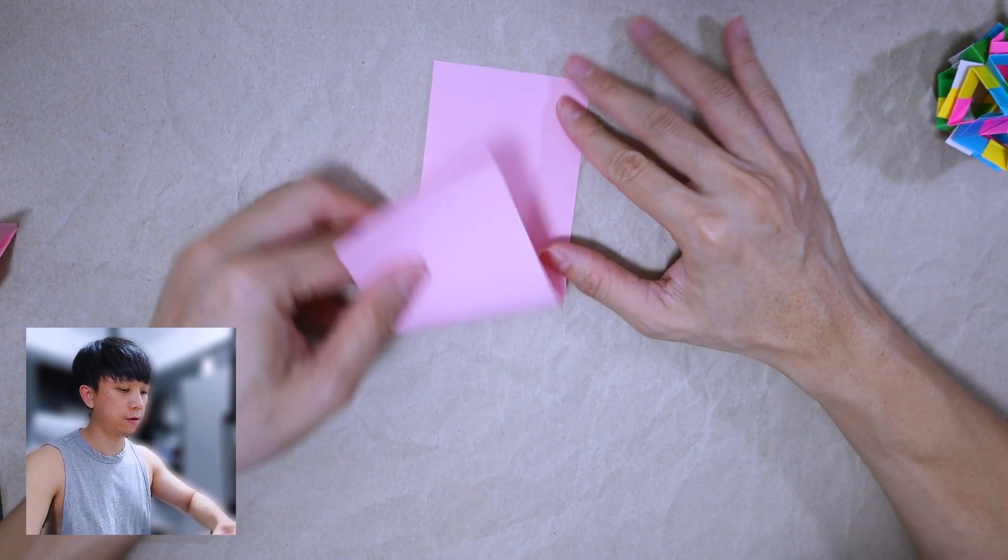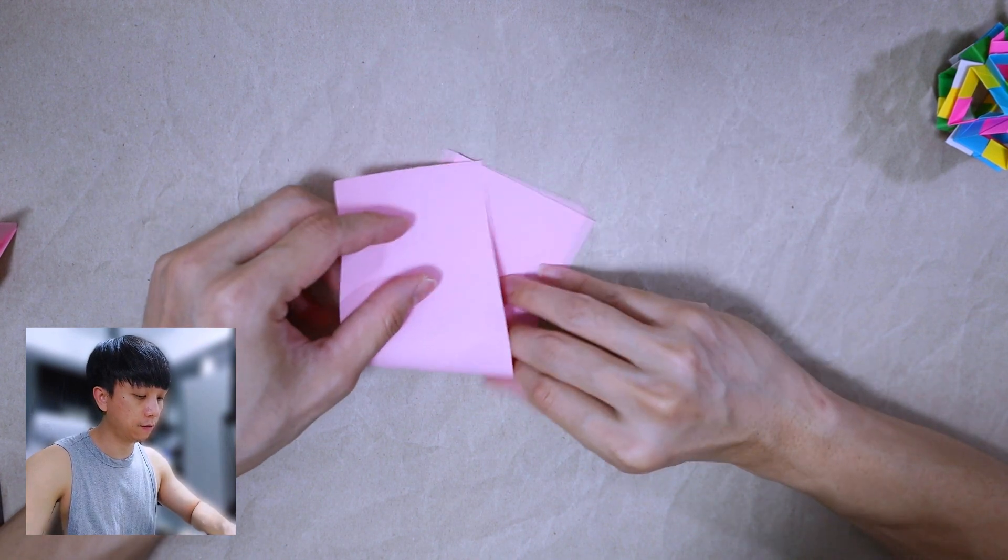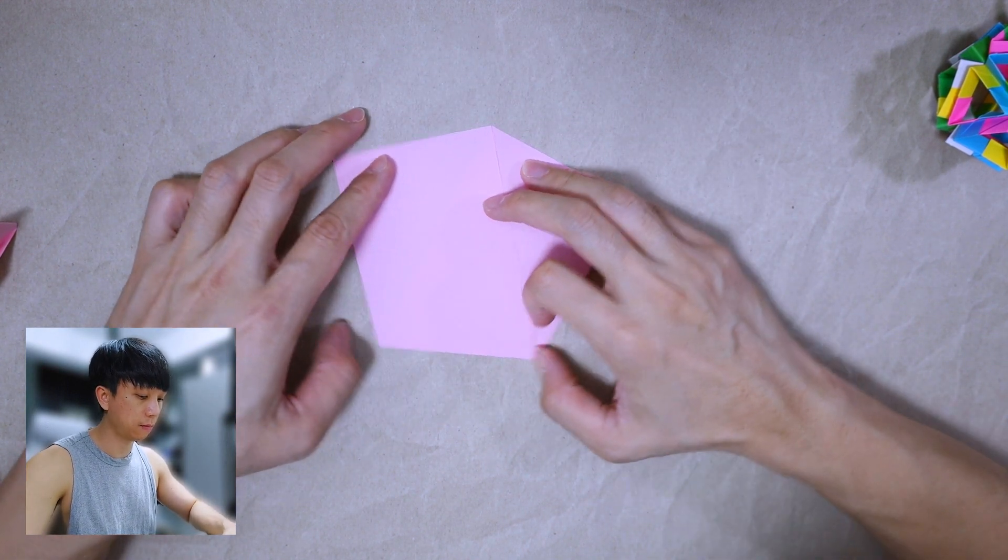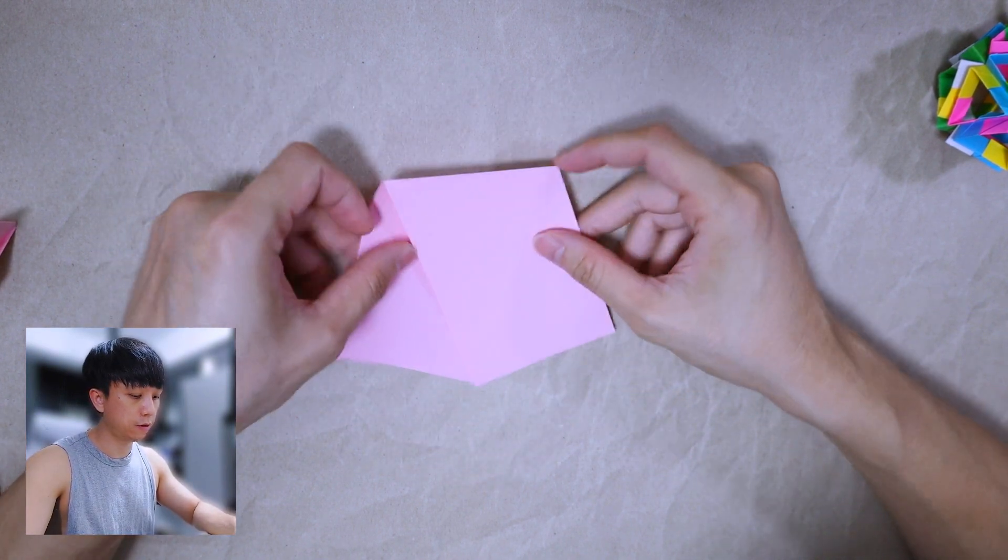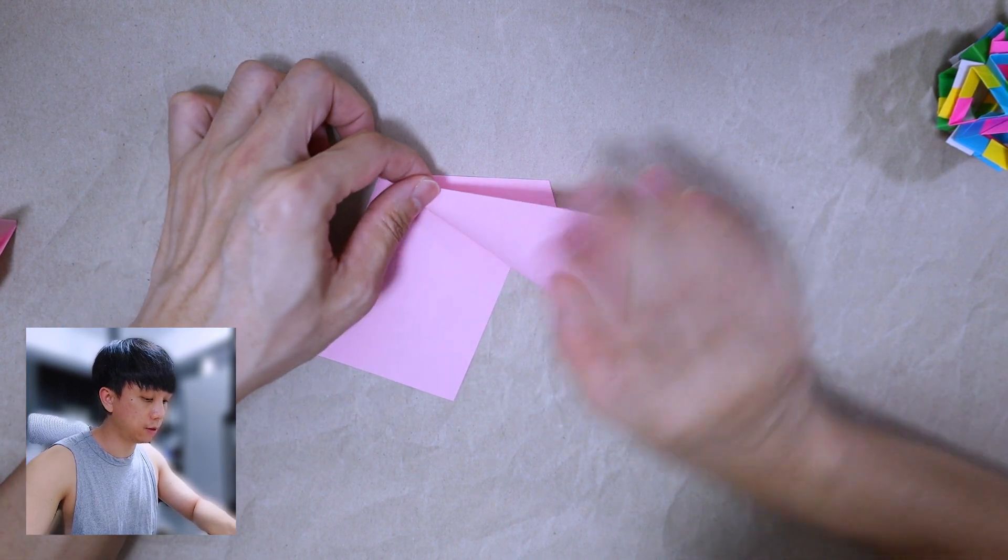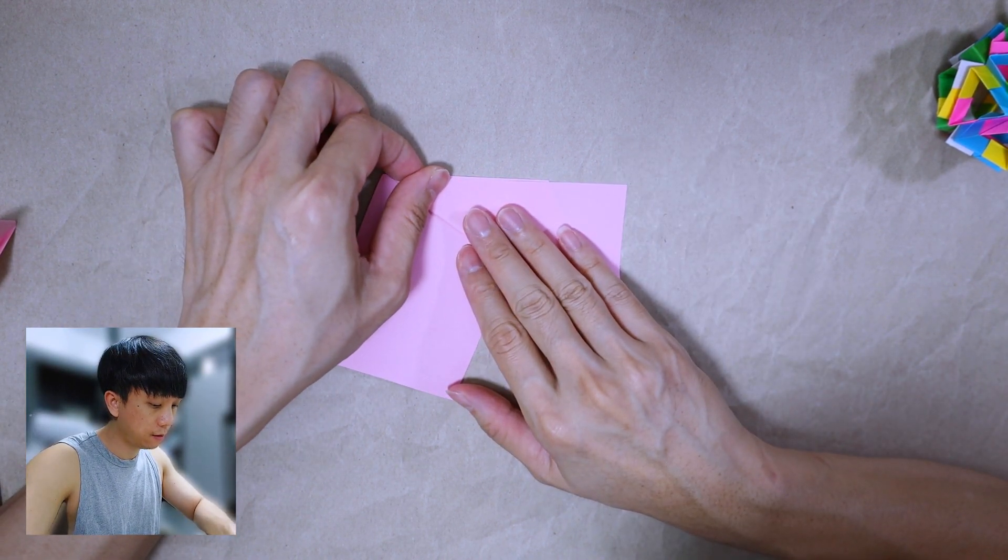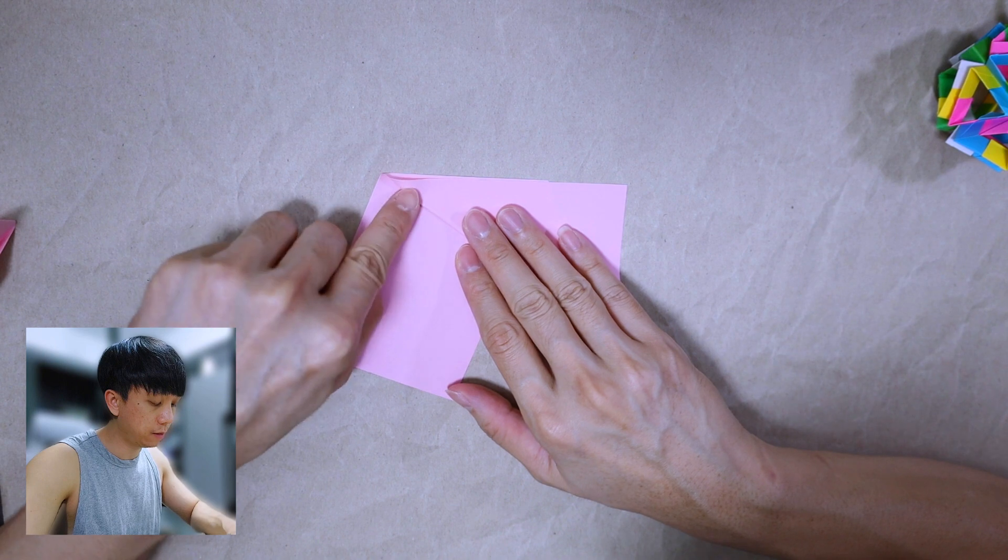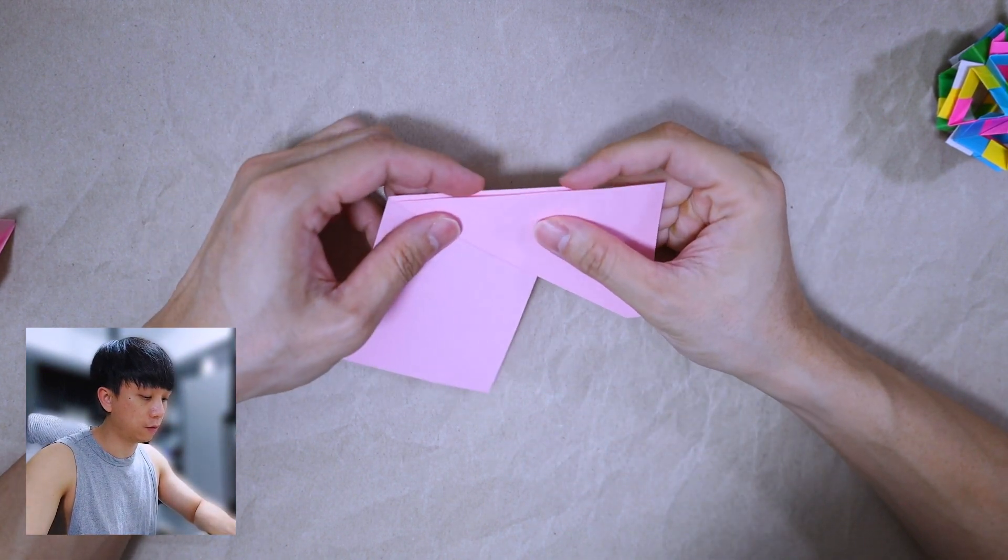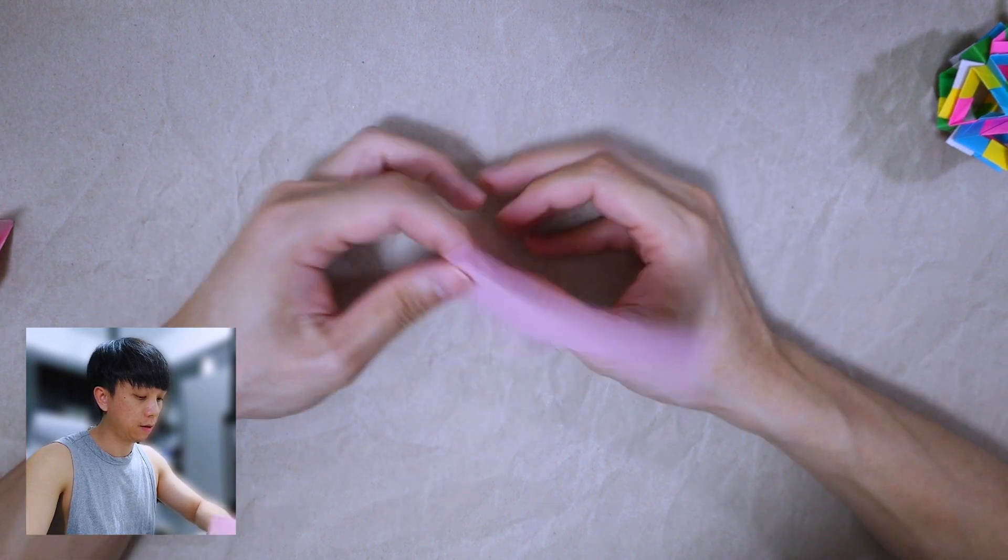We want to turn over and fold an angular bisector for this one, so just leave a little bit of gap here. You can see here there's a small gap. Now repeat at the back.